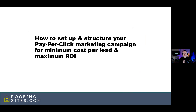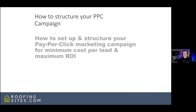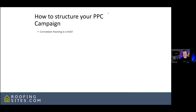So how do we set up and structure pay-per-click campaigns for minimum cost per lead and maximum ROI? First: conversion tracking is an absolute must. If you don't have conversion tracking in place, stop what you're doing, stop the ads, and get that put into place first. If conversion tracking isn't working, it's not giving valuable information back to Google that those ads are working — and that is part of the algorithm. When ads are converting well, it lowers your cost per click because Google rewards you for it.